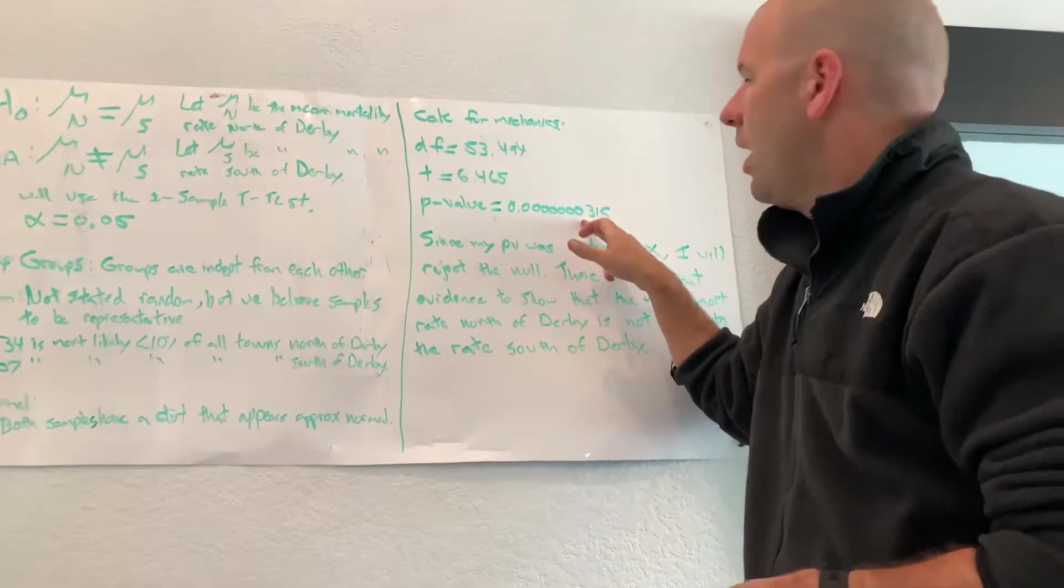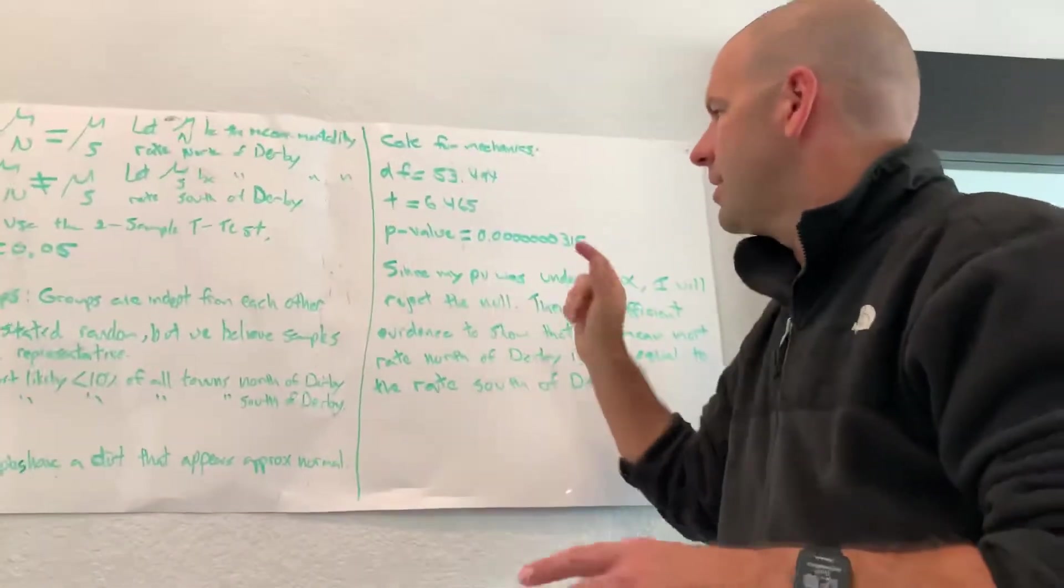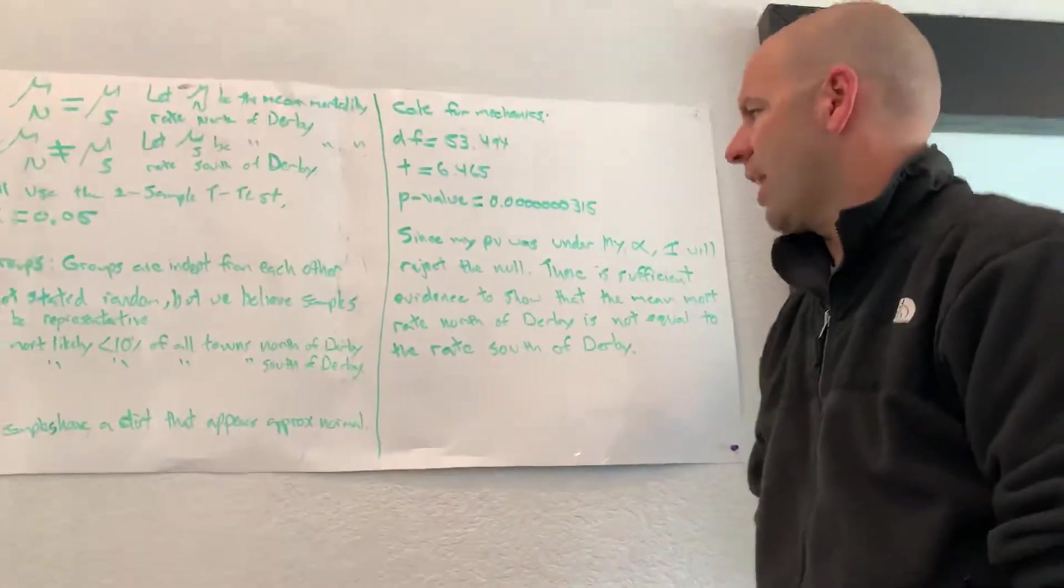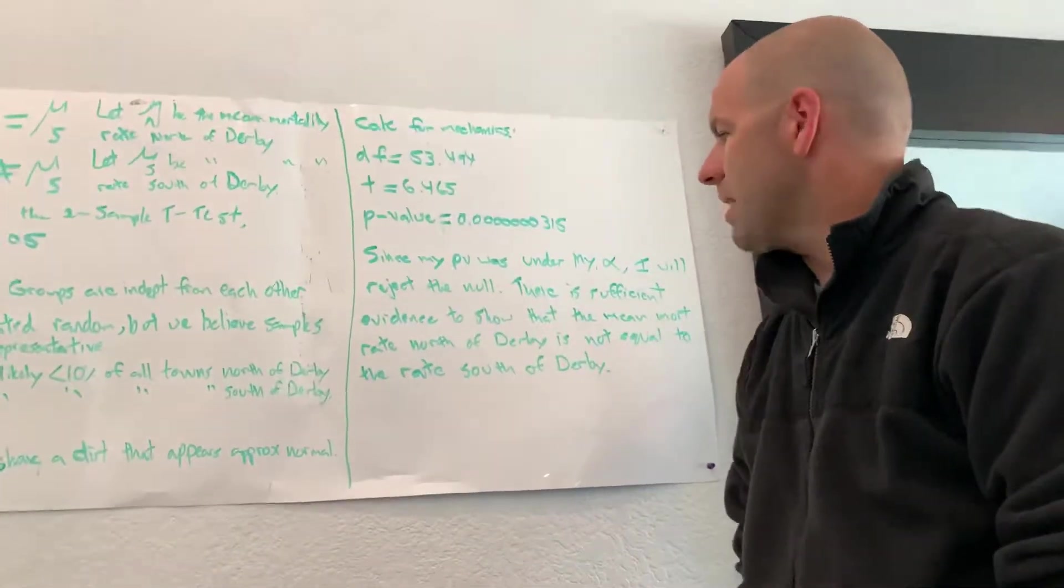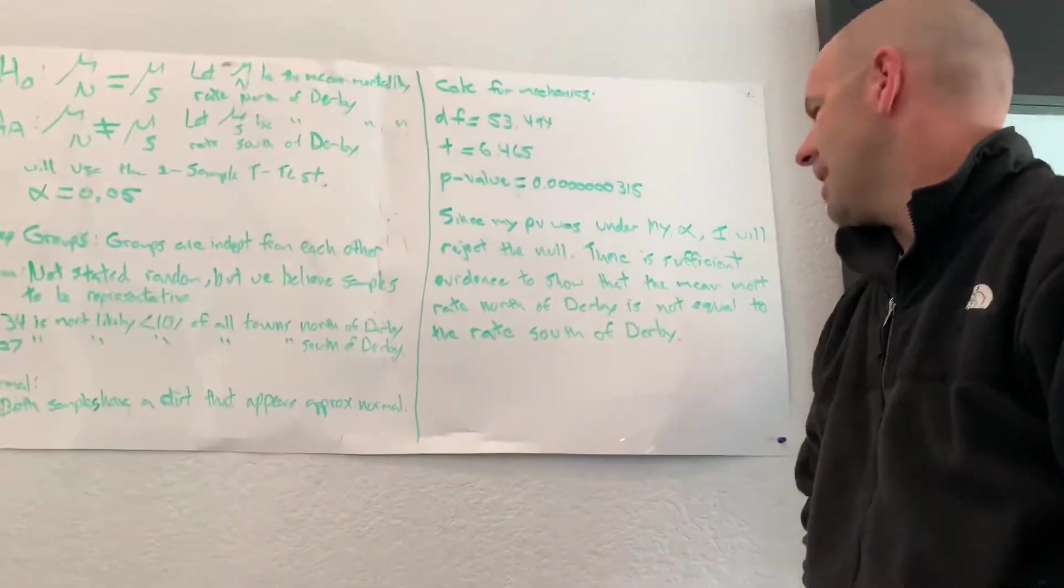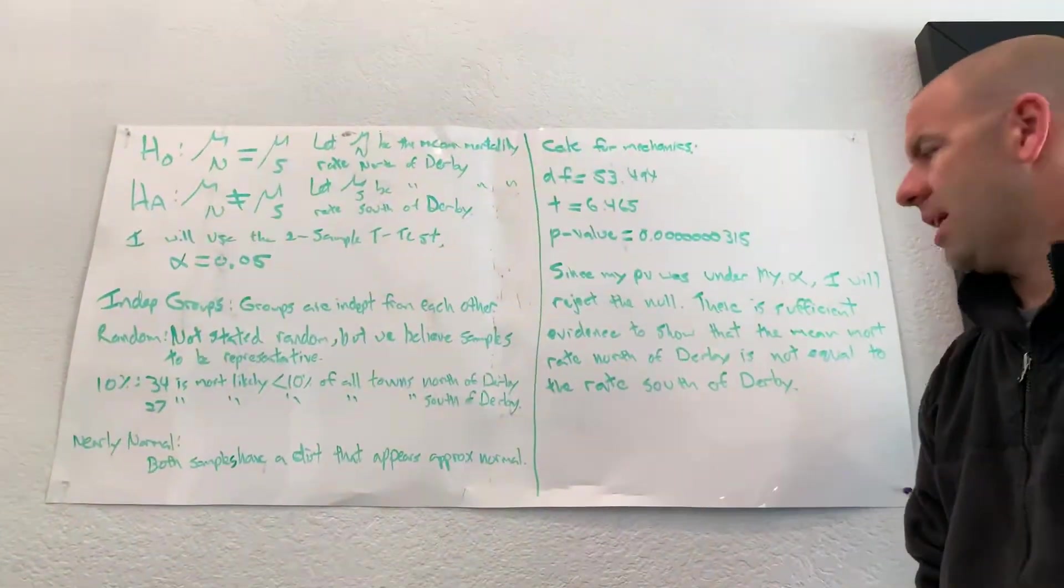Since my p-value was under my alpha, I will reject the null. There is sufficient evidence to show that the mean mortality rate north of Derby is not equal to the mortality rate south of Derby.